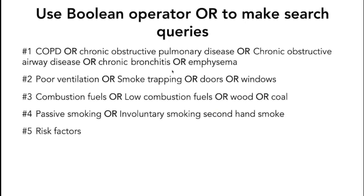The next step in creating our search string is searching for all our keywords and their synonyms using the Boolean operator OR. When searching with OR, we are doing a broad search. Our first search — hash one — is: COPD OR chronic obstructive pulmonary disease OR chronic obstructive airway disease OR chronic bronchitis OR emphysema. The results will include any article talking about any of these terms. We will see how this works in the live demonstration.